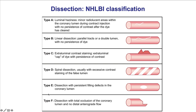Type F is complete occlusion. Type A is luminal haziness with minor radiolucent areas. Type B has a linear dissection. Type C has some extra-luminal contrast staining. Type D is a spiral dissection. Type E is dissection with persistent filling defects. And type F is complete vessel occlusion.